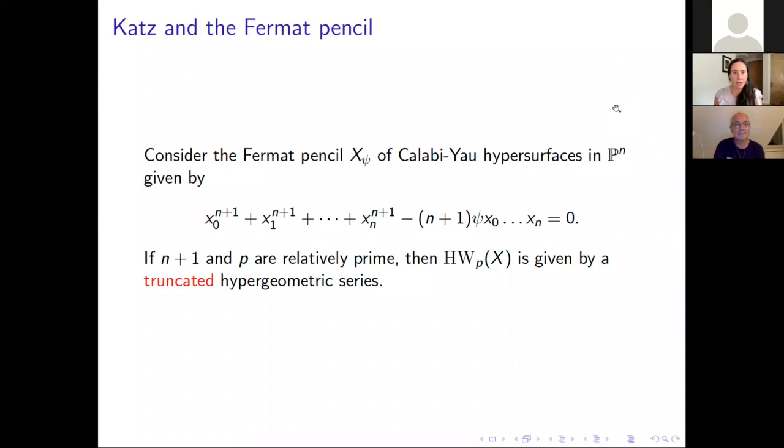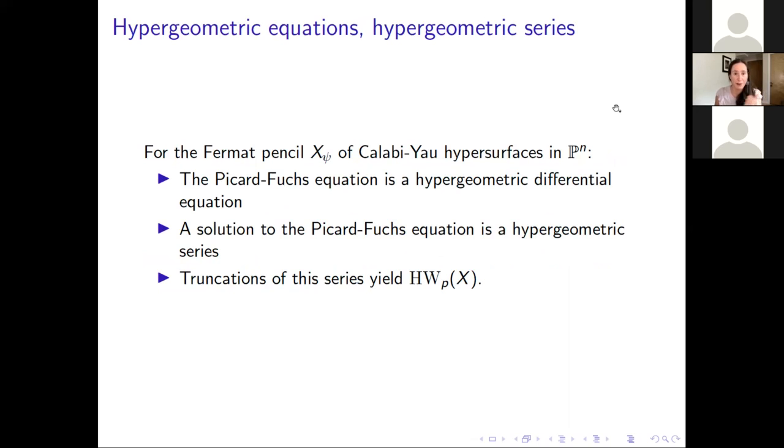That work implies that the number of points on a Calabi-Yau variety mod p, so if you count the number of solutions on this variety mod p, is determined by the Hasse-Witt matrix or the Hasse-Witt number. So this is work due to Nick Katz. And he actually has a nice algorithm for figuring this out. So this is actually not just a nice result but a very computable example. It's something that we can calculate because if we have a Calabi-Yau hypersurface cut out by one equation, then the matrix is given by the coefficient of a particular term to the p minus 1 in that p minus 1 power of that equation or that formula. So that is something that we can compute pretty straightforwardly.